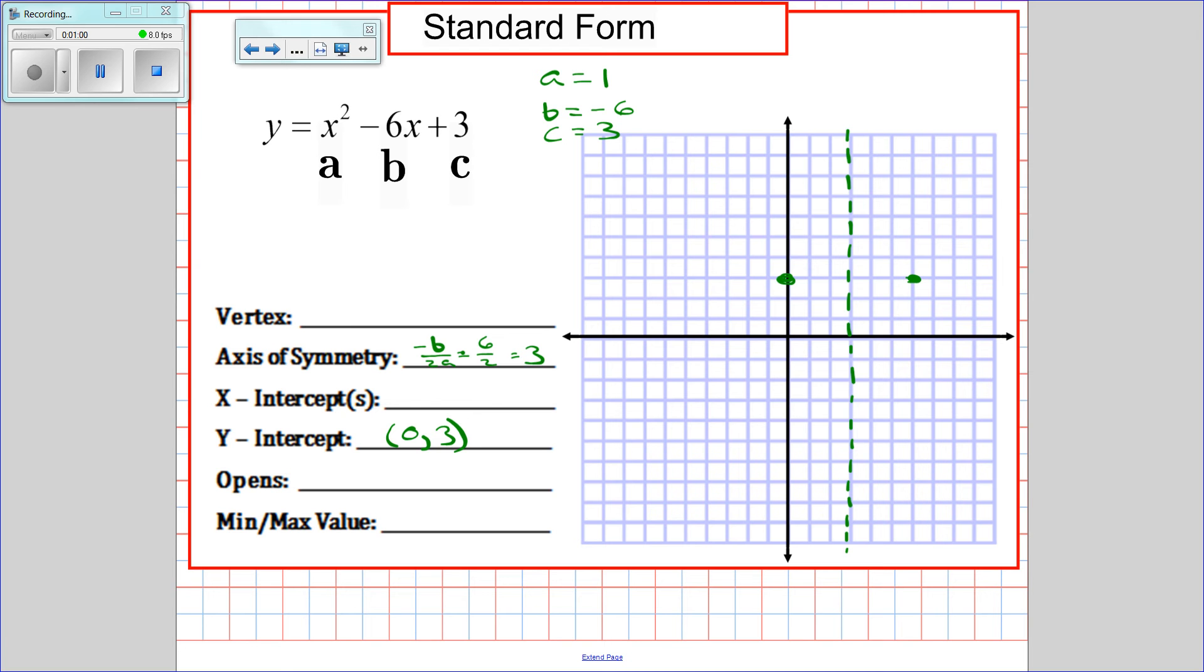Now I know that my vertex is (3, something). So to find that I am going to plug 3 into my equation. So when I plug 3 into my equation I get 9 minus 18 plus 3, which is negative 6. So that is my vertex.